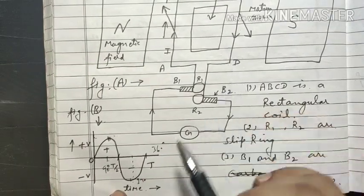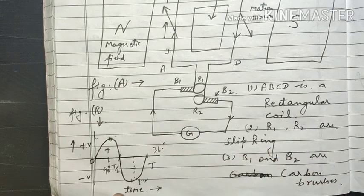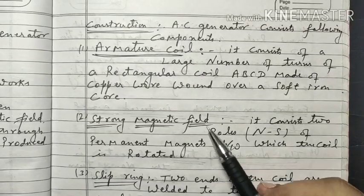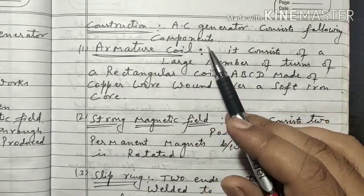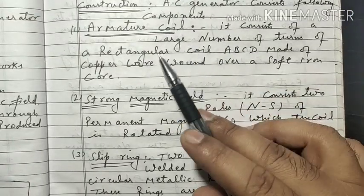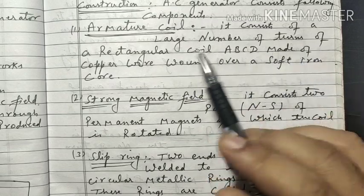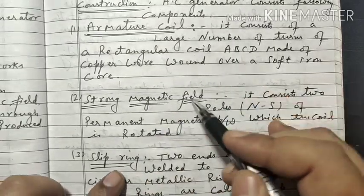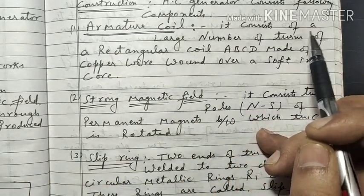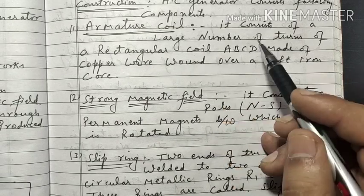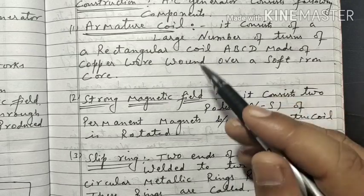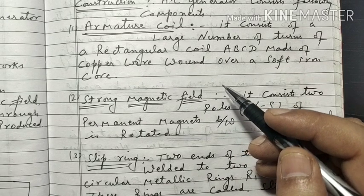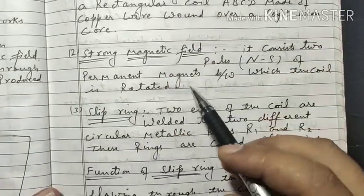Both diagrams are very important; you should draw both of them. Now let us look at the construction part. An AC generator consists of the following components. First is the armature coil, which consists of a large number of turns of a rectangular coil ABCD made of copper wire wound over a soft iron core. With more turns, more current flows and more induced EMF is produced.